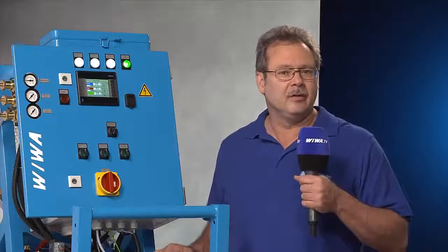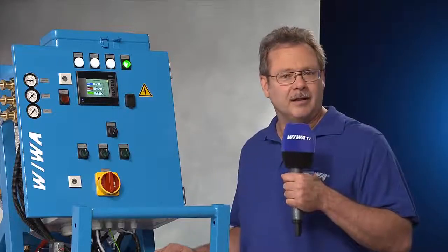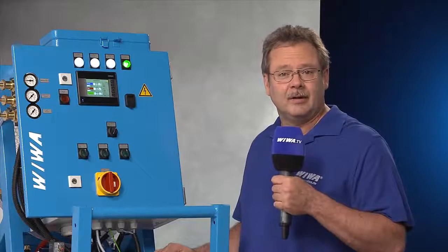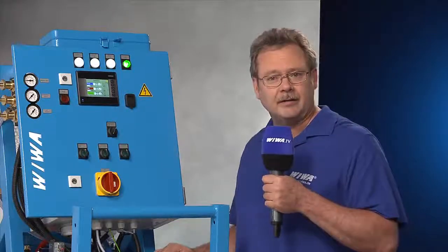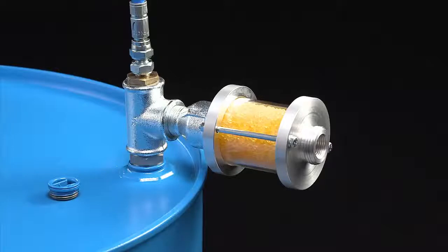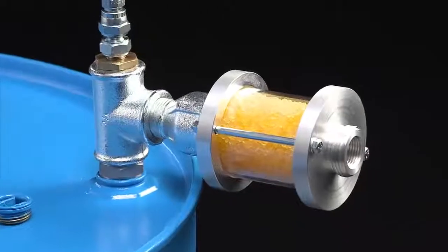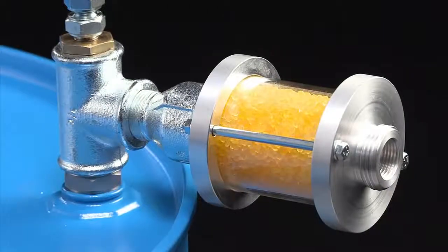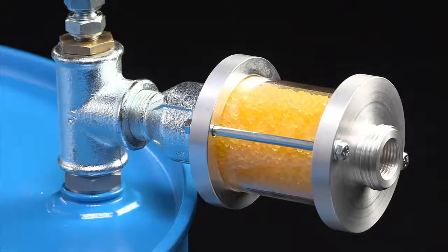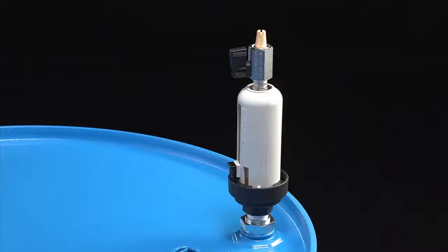When doing this, ensure correct component allocation at all times. I'll show you how to bleed the system later on. If you have a system with the circulation option, we recommend using the silica gel filter mounting kit for feed pumps with return hoses. If you are using the PU-460 without circulation, we recommend the silica gel filter for feed pumps without return hoses.